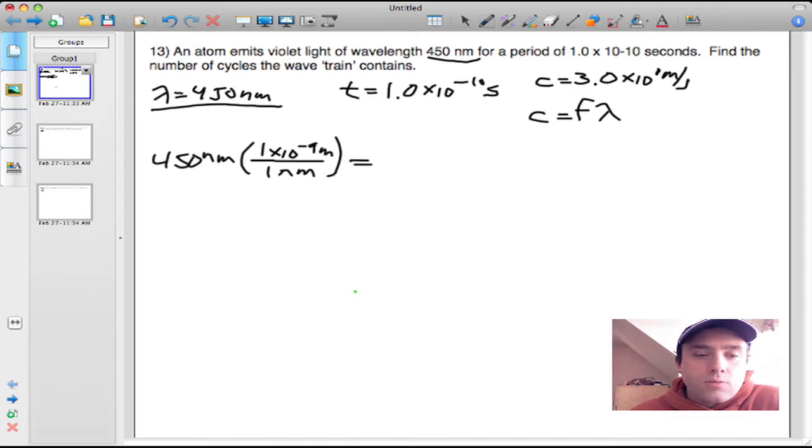When you do this math, multiplying 450 by 1 times 10 to the negative 9, you get 4.5 times 10 to the minus 7 meters. Now we're in good shape to work through this problem.